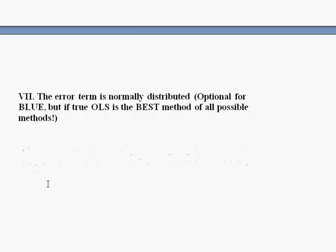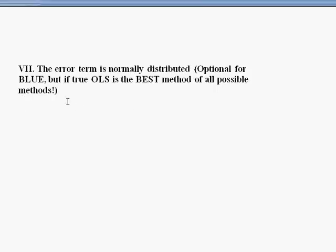Now, the last assumption is pretty simple. It's not required for the classical linear regression model, but it's kind of a bonus. So, we call it the seventh assumption. And the seventh assumption is that the error term is normally distributed. So, theoretically, the error term has a normal distribution. We check this by looking at the distribution of the residuals that we actually get to observe.